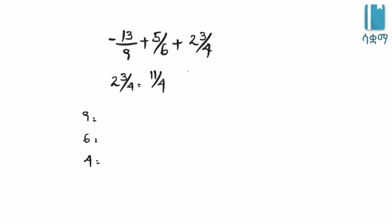To find the least common multiple, we list multiples: 9 times 1 is 9, 9 times 2 is 18, 9 times 3 is 27. And for 6: 6 times 1 is 6, 6 times 2 is 12, 6 times 3 is 18.